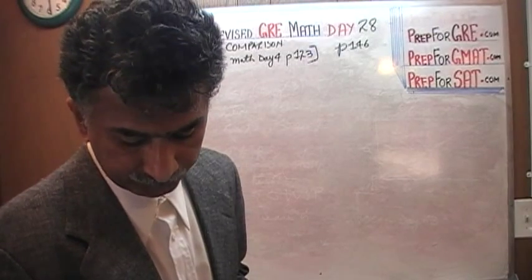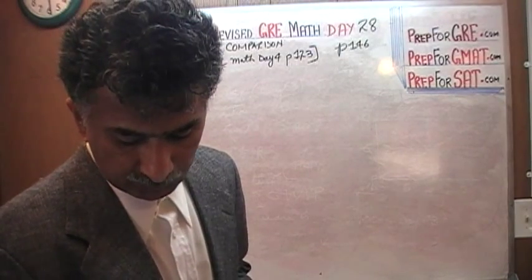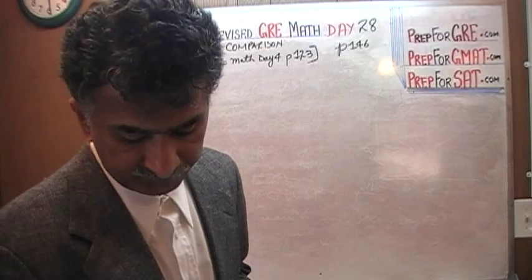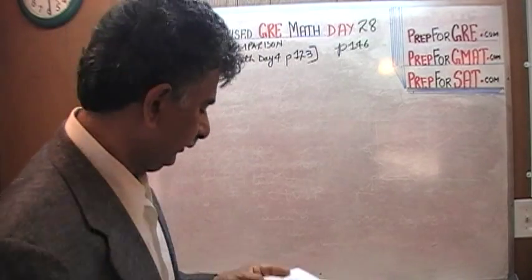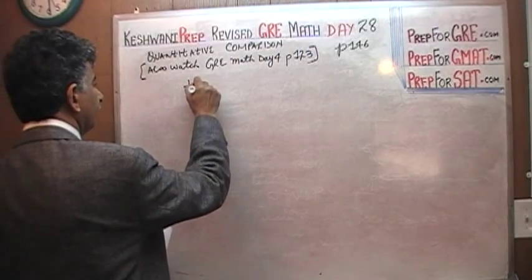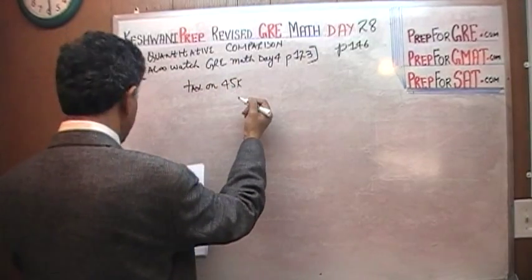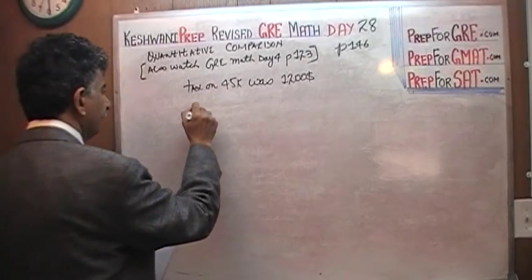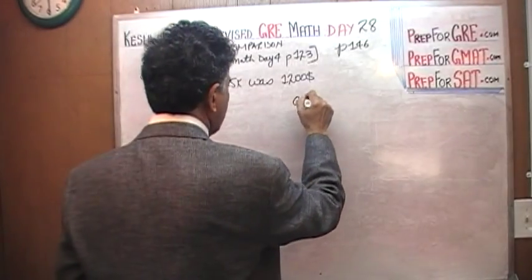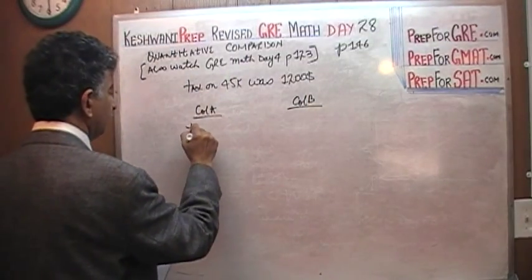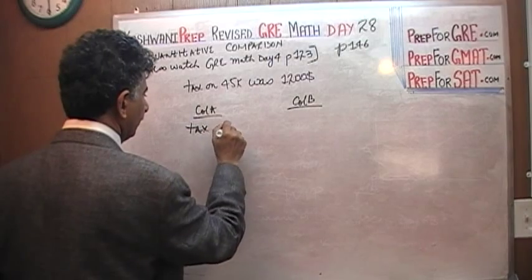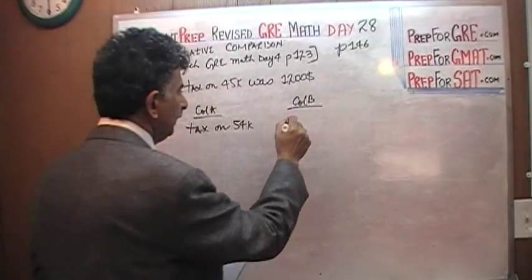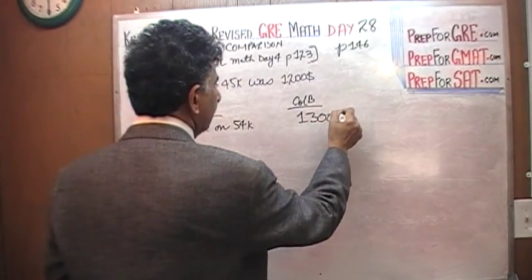Nothing has changed so far — it is the exact same thing — where P is a constant. The property tax in 2009 on a home in town X that has an assessed value of $45,000 — the tax on $45,000 was $1,200. In column A, we are given the tax on $54,000. And in column B, we are given $1,300.